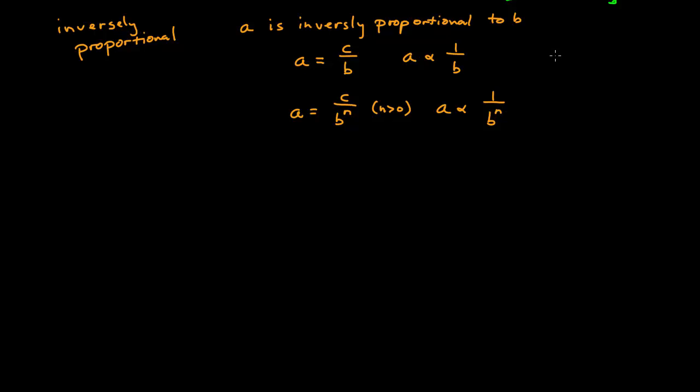We don't really need to speak this way. This is really just a separate class of expressions that we had before: a is equal to c b to the n, where n is less than 0. That is essentially mathematically equivalent to this sort of expression. And that's absolutely correct.